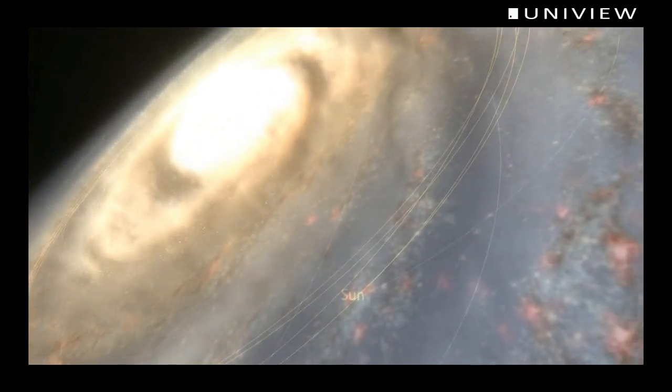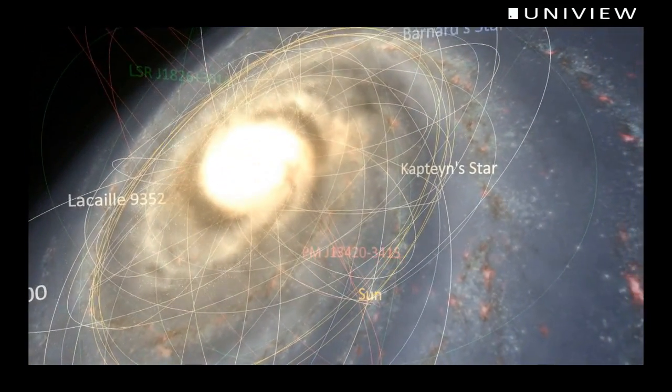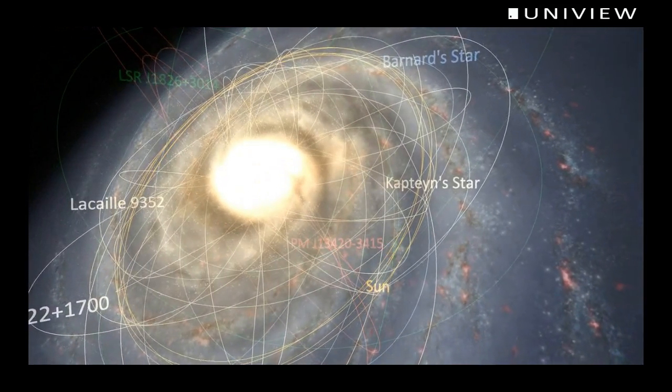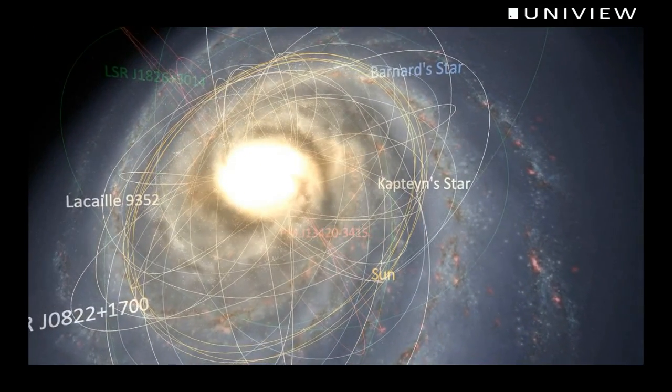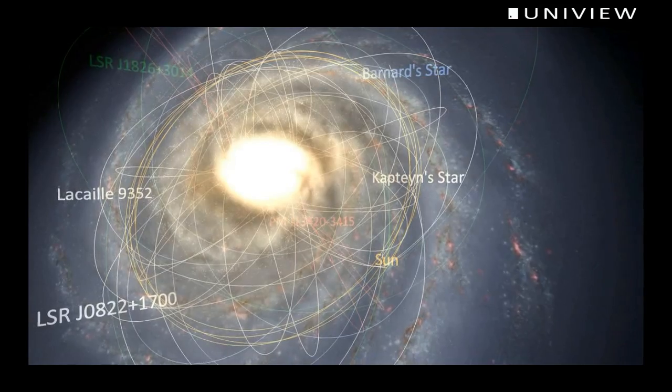As the planets orbit the sun, so the stars orbit the galaxy, making the Milky Way a carousel of enormous proportions where we need a quarter billion years to complete one full orbit.